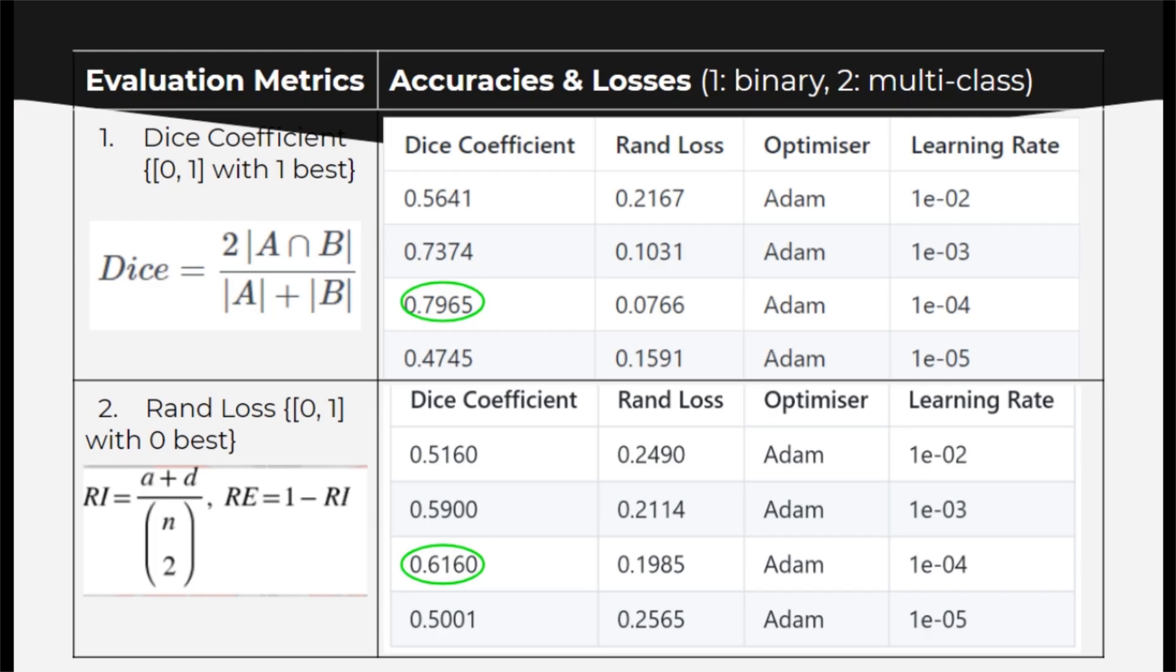After rigorous experimentation, I achieved an accuracy of 93.89% in binary classification, 79.65% in binary segmentation, and 61.6% in multi-class segmentation.